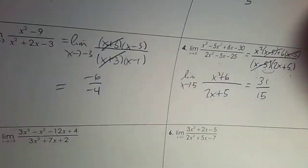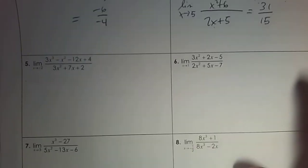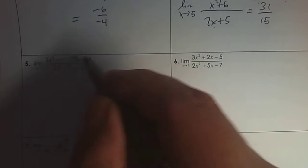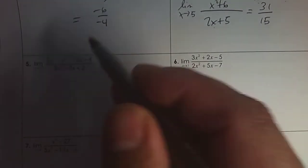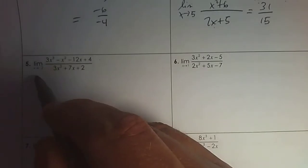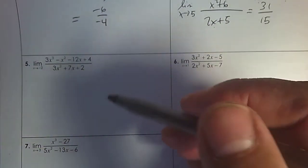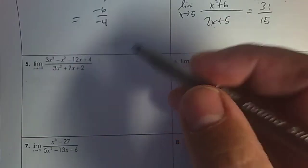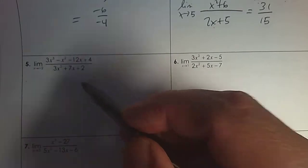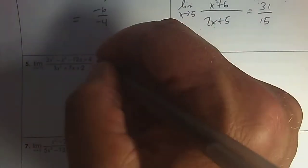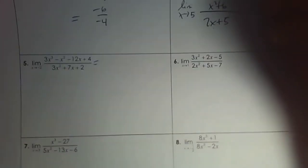Number 5. Can you evaluate a limit algebraically? Step 1: plug in negative 2, top and bottom. When you plug in negative 2, if the answer is not 0, we wouldn't go any further. But it is 0 — so the numerator and denominator are both 0. We're going to factor by grouping, and we're going to write down the limit notation.